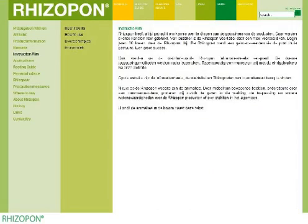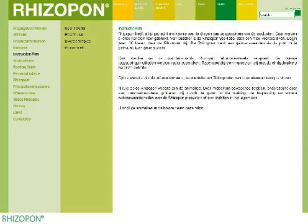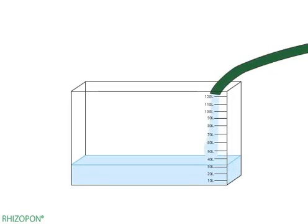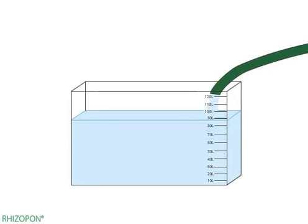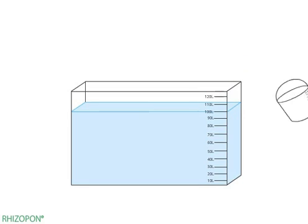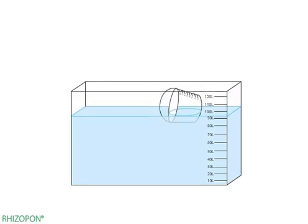On the website, you can also view an instructional video on using the tablet counter. Pour 100 liters of water into the mixed tank. Use a bucket to take out about 6 liters of water from the mixed tank.